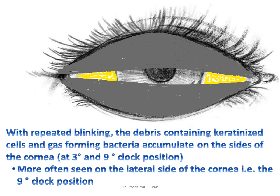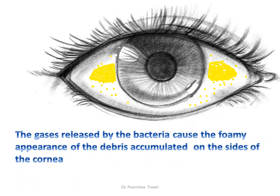With repeated blinking, the mixture of cell debris and gas-producing bacteria accumulates on the side of the cornea, more often on the lateral side. The gases released by this bacteria cause the foamy appearance of the accumulated debris — the characteristic foamy appearance of a Bitot spot.